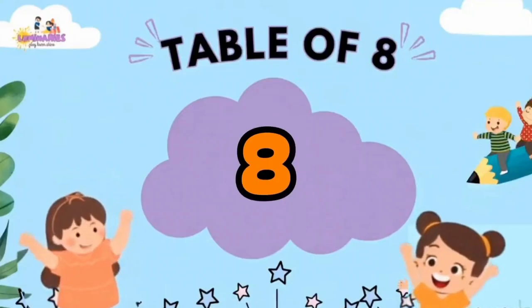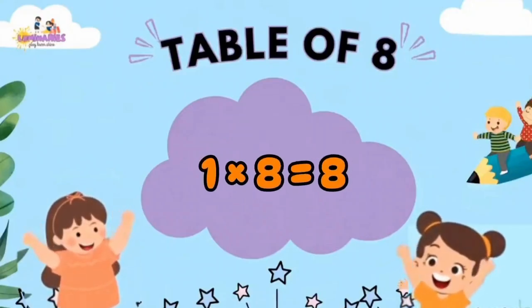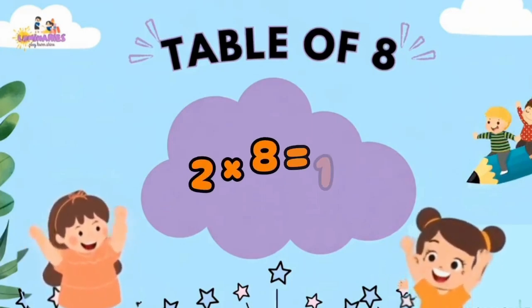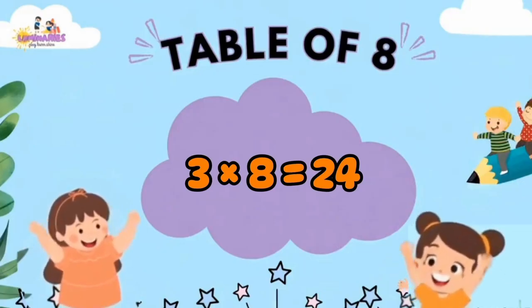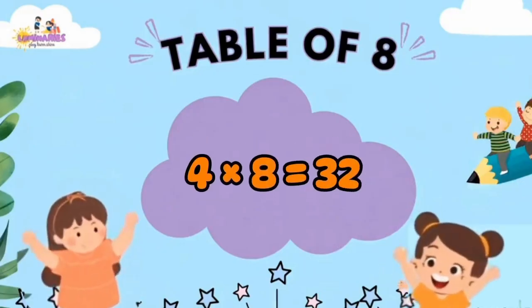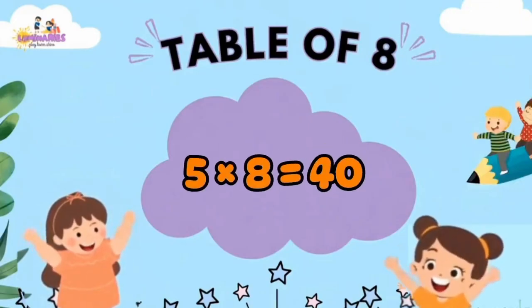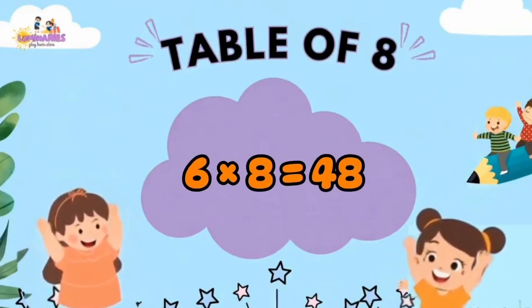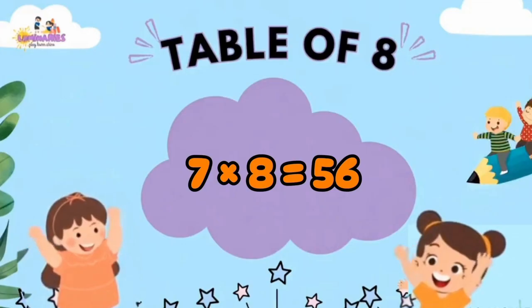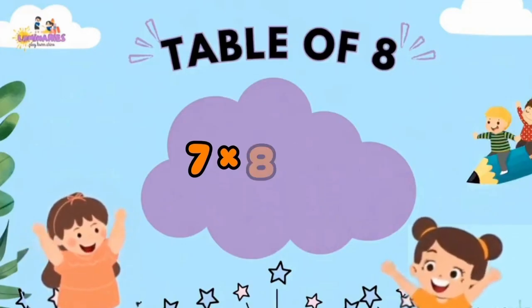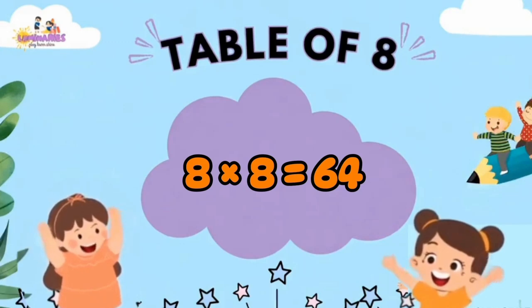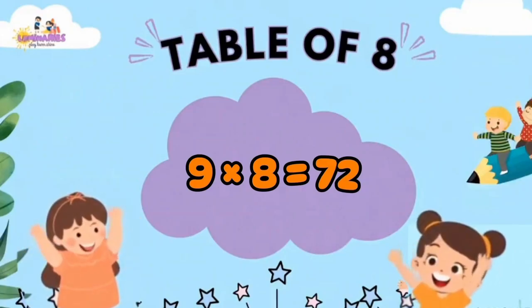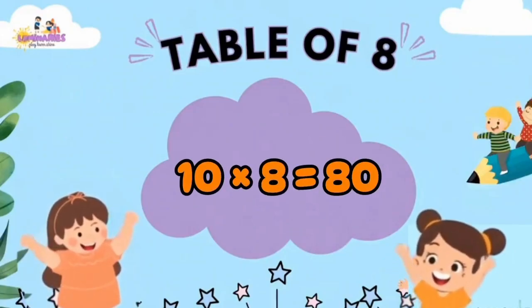Table of 8. 1 x 8 is 8. 2 x 8 is 16. 3 x 8 is 24. 4 x 8 is 32. 5 x 8 is 40. 6 x 8 is 48. 7 x 8 is 56. 8 x 8 is 64. 9 x 8 is 72. 10 x 8 is 80.